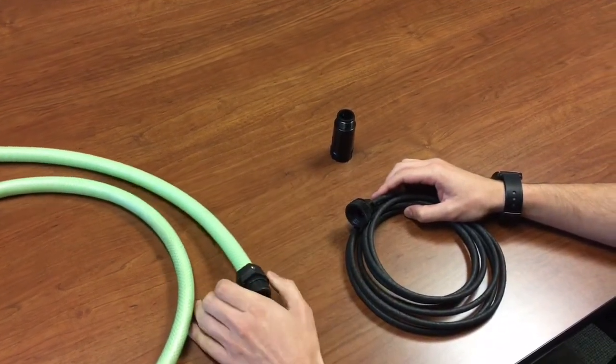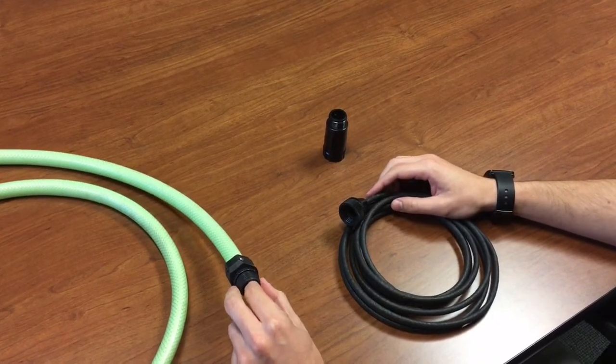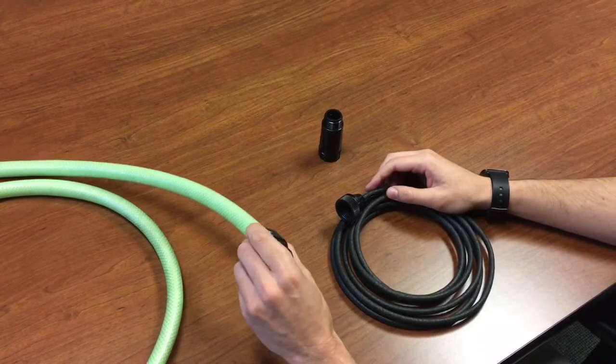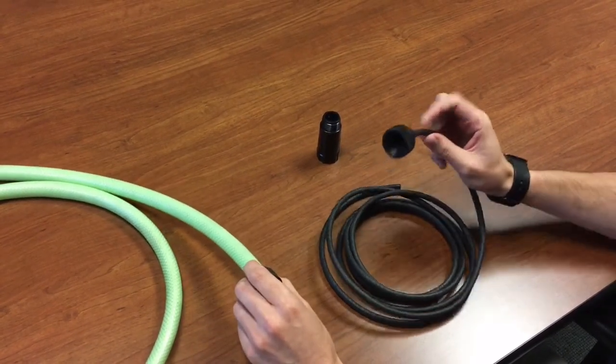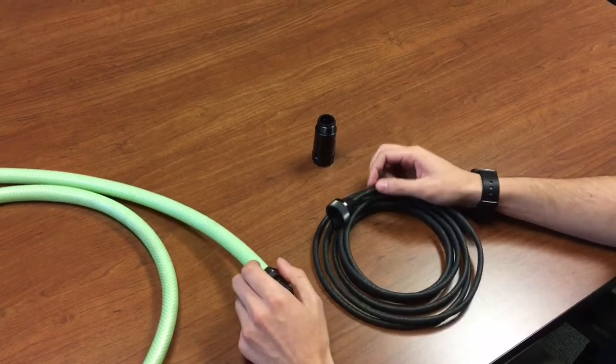Now, one thing I want to make sure we mention is that it probably wouldn't be the best idea to directly connect just the hose to soaker tubing. The pressure might become a problem, so what we want to do is add in this pressure reducer.